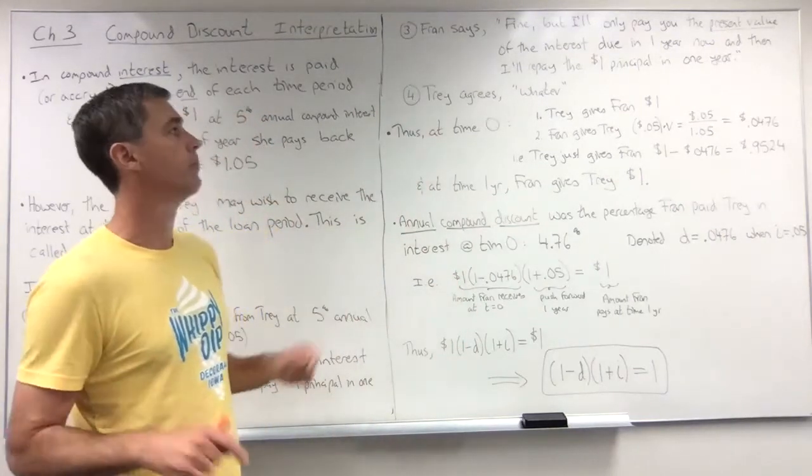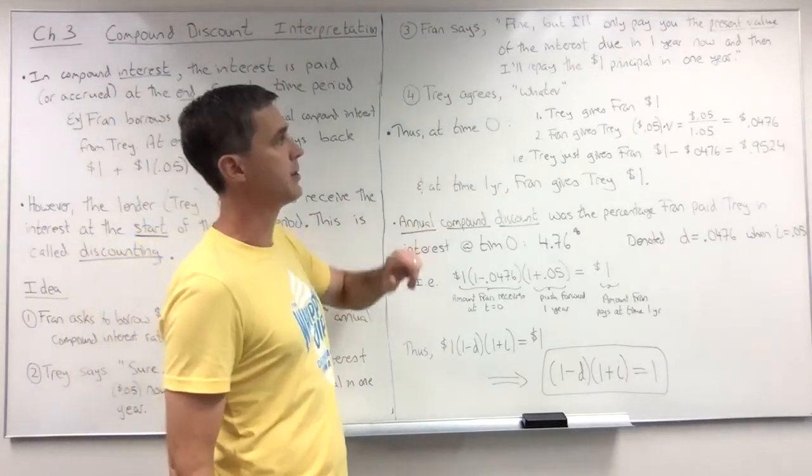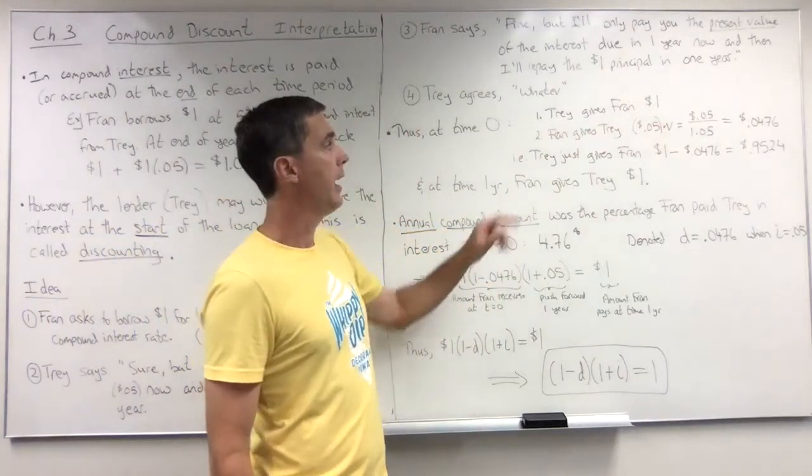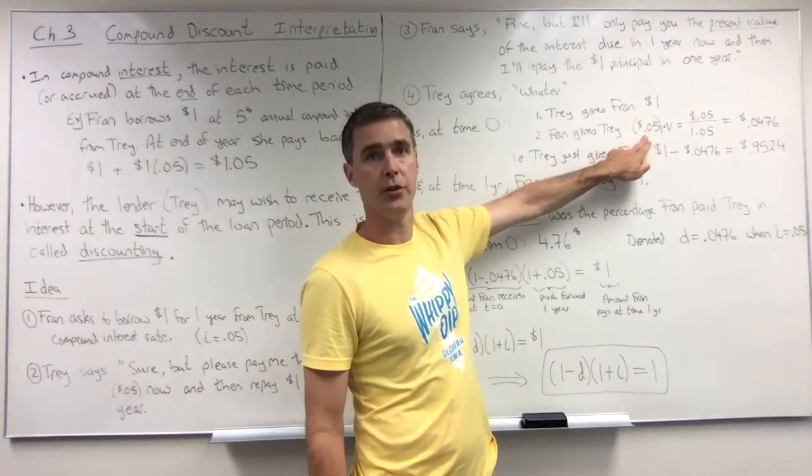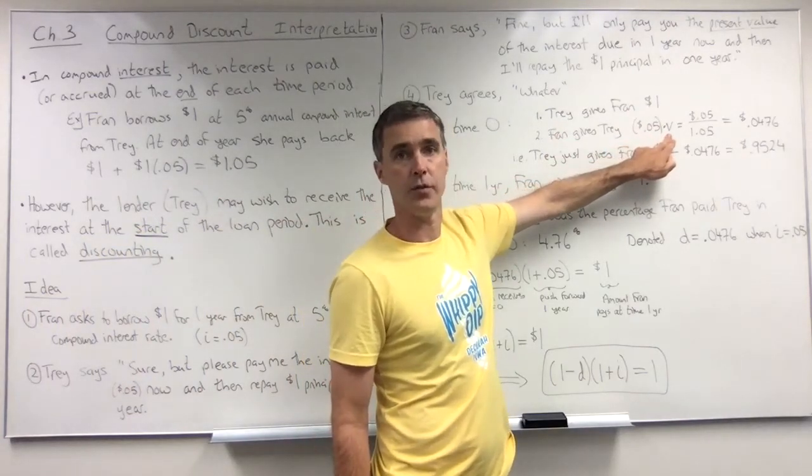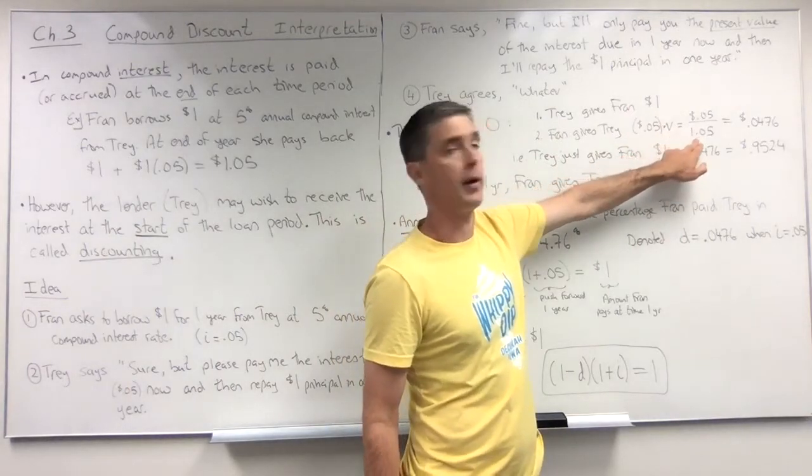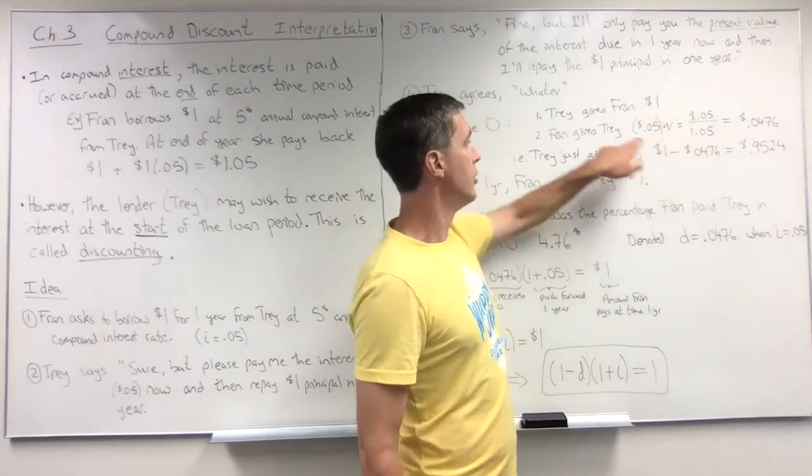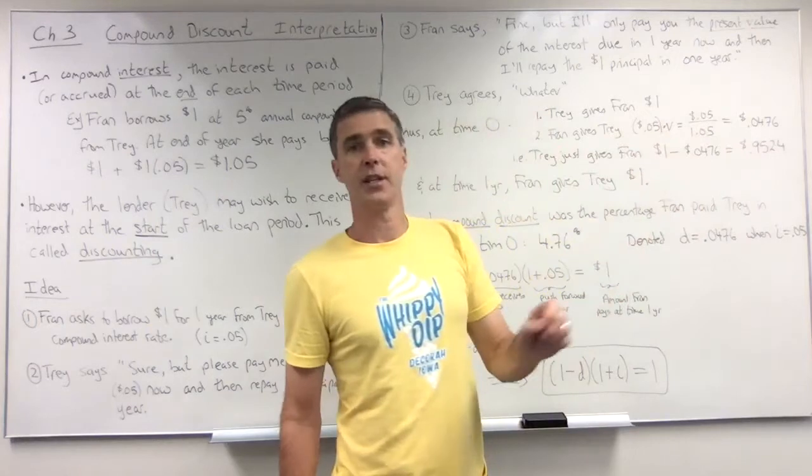So thus the transaction is: at time zero, Trey gives Fran one dollar and Fran gives Trey that five cents worth of interest dragged back one year, so times V. Now multiplying by V is multiplying by one over 1.05, in other words dividing by 1.05. So Fran is actually giving Trey four point seven six cents.